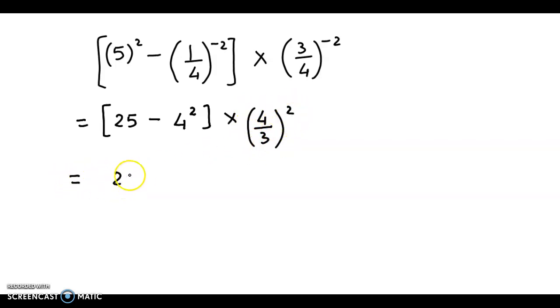Proceeding further we get 25 minus, now 4 square is 16 into, now here we have 4 by 3 the whole square. So we just 4 square upon 3 square. Now 4 square is 16 and 3 square is 9.